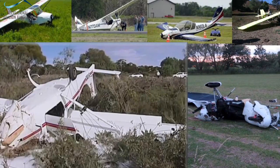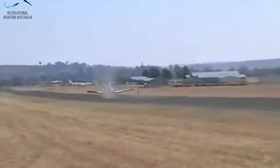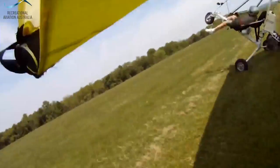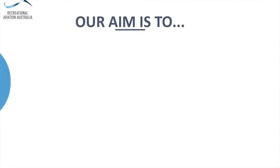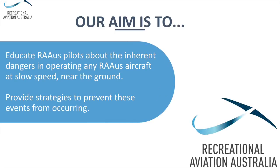Let's have a look at some of the outcomes of unfortunate loss of control events and the damage that occurs. This applies to a range of different aircraft types in Recreational Aviation, not just our 3-axis aircraft, and the consequences can be grave. Our aim today is to educate RAA's pilots about the inherent dangers of operating any RAA aircraft at slow airspeeds near the ground, and provide some strategies to help prevent these events from occurring again.